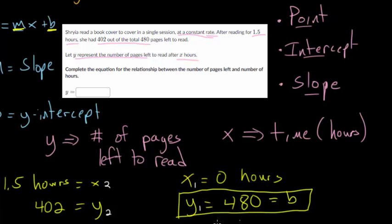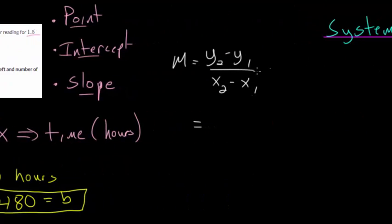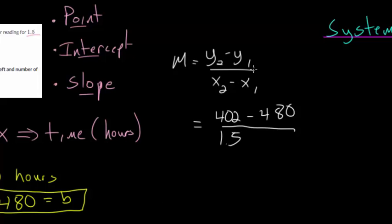So we've got 402 for y2, so that'll go up top. And we will be subtracting y1, which was 480. And on the bottom, x2, well, that was at our 1.5 hours. And x1 is just the 0 hours, so minus 0 here. So you get minus 78 divided by 1.5, which we'll have to put into the calculator. And what you get is minus 52. And this is our slope. So we just found m there.